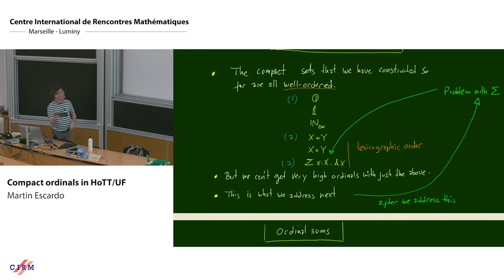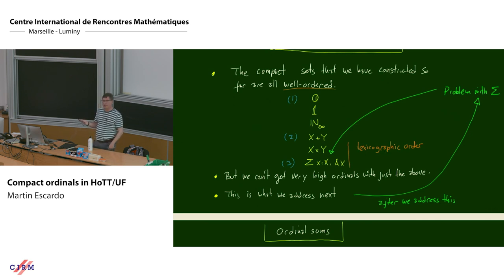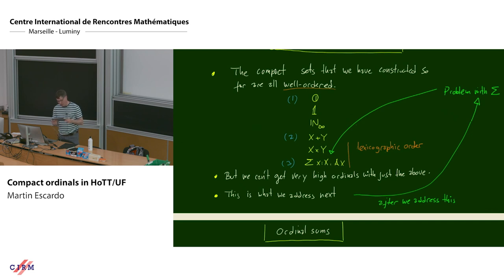We can keep iterating these constructions to get more and more compact types, and they are all well-ordered. The empty type is well-ordered, the one-point type is well-ordered, and N∞ is well-ordered if you're careful about how you define less-than. You can order the Cartesian product lexicographically in the usual way to get the ordinal product, and similarly for the sum — almost, but there is a problem.